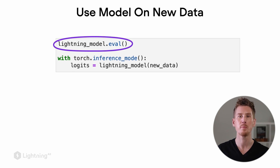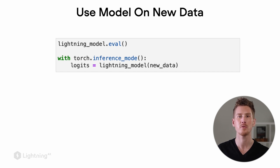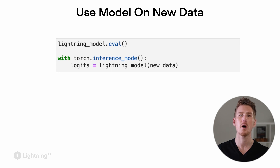In order to use the model on new data, we put the model into eval mode as shown here. This will put the model into an evaluation mode, and it will become more clear why we do that when we talk about techniques like dropout or batch normalization later on. It's always best practice to put the model into eval mode before we apply it to new data.